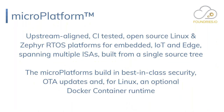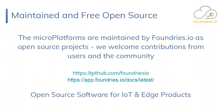We call this the Micro Platform — an upstream-aligned, tested open source Linux platform, and also RTOS platforms using Zephyr, which is another Linux Foundation project — think of it as the Linux of RTOSes. It spans multiple ISAs built from a single source tree, builds in best-of-class security, over-the-air updates from scratch, and an optional Docker container runtime for the Linux implementation. They're maintained by us as open source projects, you can get them from GitHub, read the documentation — all completely free.